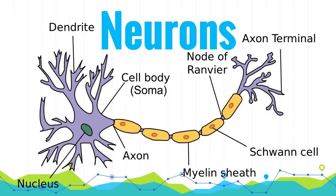Dendrites receive information from other neurons. That information is then passed down through the soma, or cell body, through the axon to the axon terminal, where that information in the form of neurotransmitters or other ions is passed on to other neurons. That's how neurons transmit information. The myelin sheath is an insulating layer along the axon, and since it insulates that part of the neuron, it can make communication even faster, allowing neurons to transmit information from one part of the body to another.